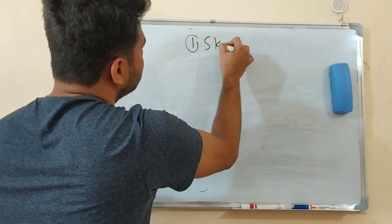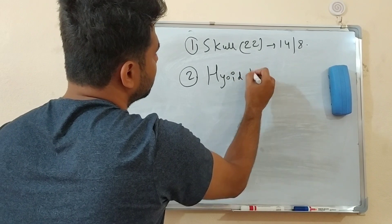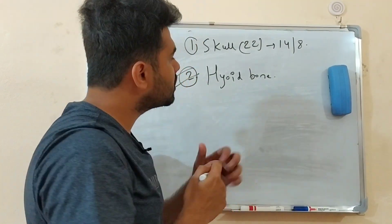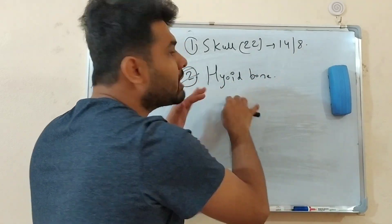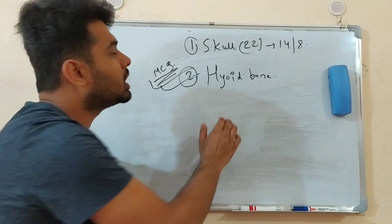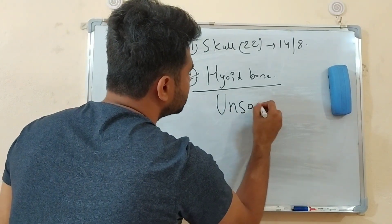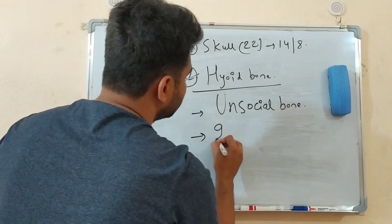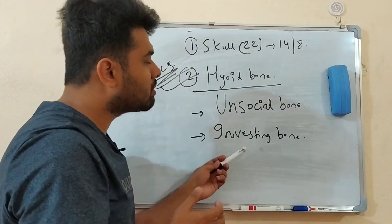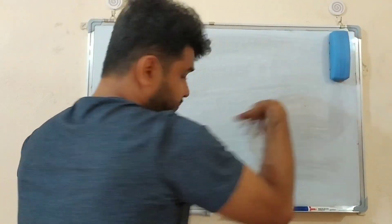To summarize: the skull bone has 22 total — 14 facial bones and 8 cranium bones. The hyoid bone is the most important in MCQ. The hyoid bone is also called the 'investing bone' or the 'unsocial bone' — it is not articulated with any other bone. MCQ question: which of the following is the investing bone? The answer is the hyoid bone.